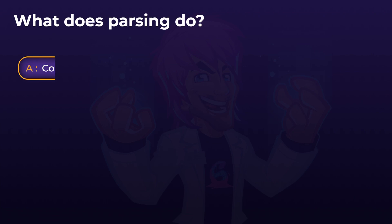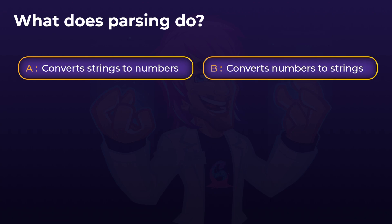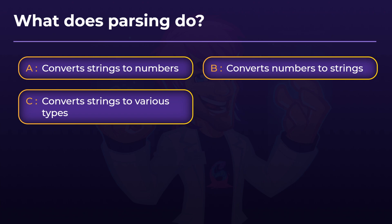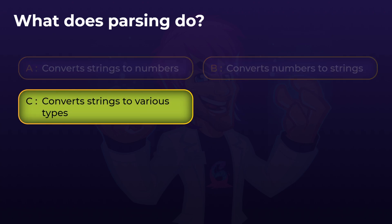What does parsing do? Does it convert strings to numbers? Convert numbers to strings? Or convert strings to various other types? This is the point and purpose of parsing in C#. And the answer is: it converts strings to various types.